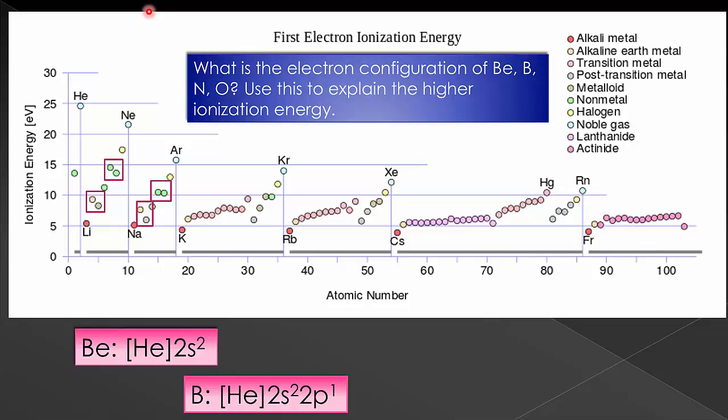Now, what do we notice about this? Beryllium has a full S shell and no electrons in the P orbital. For boron, there's only this one electron in the P orbital. We know that fully filled and half filled subshells are stable.